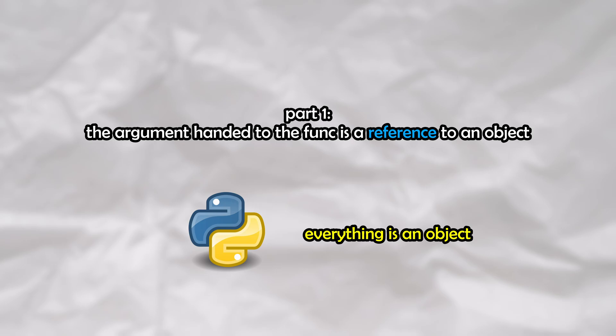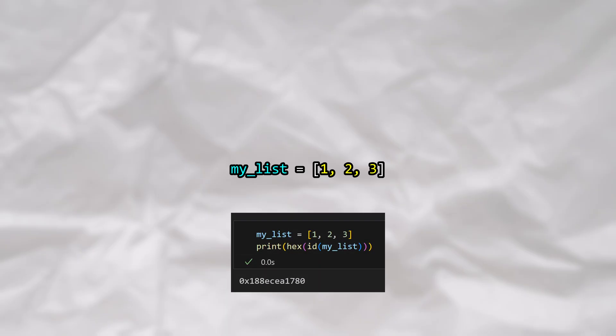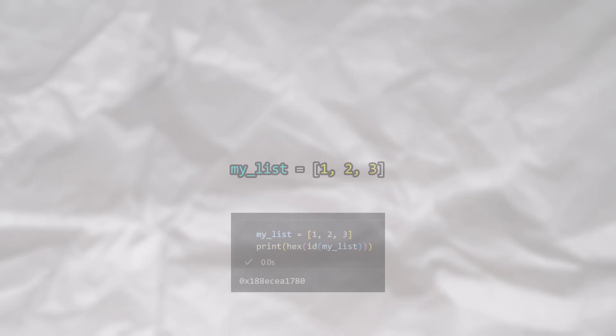Unlike more traditional languages such as C and C++, Python does not have primitive data types. This means that anything from a string to even a simple integer is an object. Let's say that we create a list consisting of three numbers. We know that this list is an object and that the variable called myList is a reference to that object. If we print the memory location of myList, we can see the memory location of our list. Let's also create a function that accepts a list and appends the number 4 to the list.